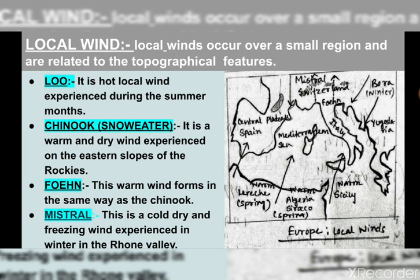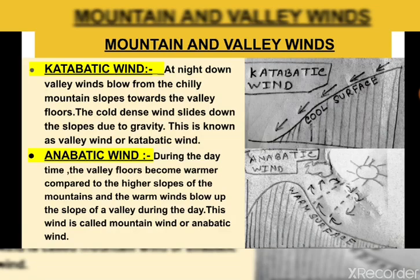The next is Chinook, also known as the snow eater because it raises the temperature. It is a warm dry wind experienced on the eastern slopes of the Rockies in North America. Because it raises the temperature it melts the snow on the mountain slopes, hence the name snow eater. The next is Fawn — a warm wind that forms in the same way as Chinook and is experienced in the valleys of the northern Alps in spring, especially in Switzerland. Mistral is a cold, dry, freezing wind experienced in winter in the Rhone valley. It is a violent wind that lowers the temperature and blows continuously for several days.